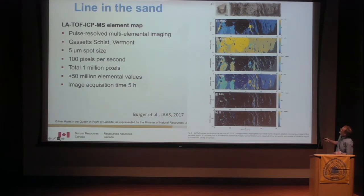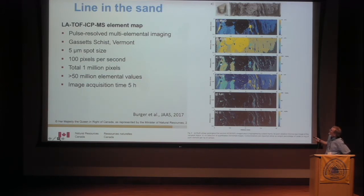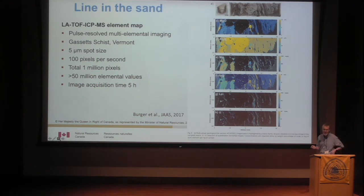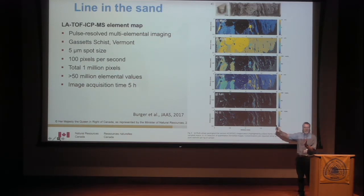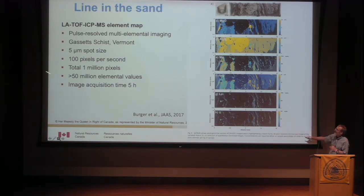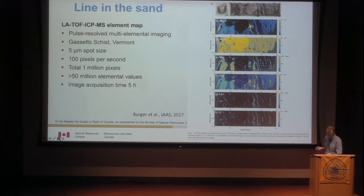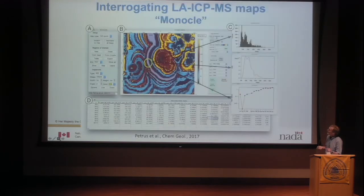Here are maps produced by laser ablation time-of-flight for a schist. They're not particularly exciting chemical maps, but look at these numbers: each pixel here is five microns. They were measuring 100 pixels per second using this technology — a total of one million pixels — which means they measured the entire periodic table on a million pixels in five hours. That means they ended up with more than 50 million elemental concentrations in just a few hours. Unbelievable.